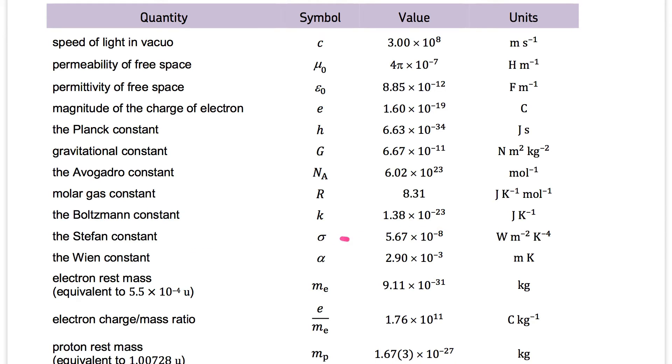The Stefan constant is 5.67 times 10 to power minus 8 watts per square meter per Kelvin to the power minus 4. The Wien constant is alpha, 2.90 times 10 to power minus 3 meters Kelvin. Electron rest mass equivalent to 5.5 times 10 to power minus 4 units.